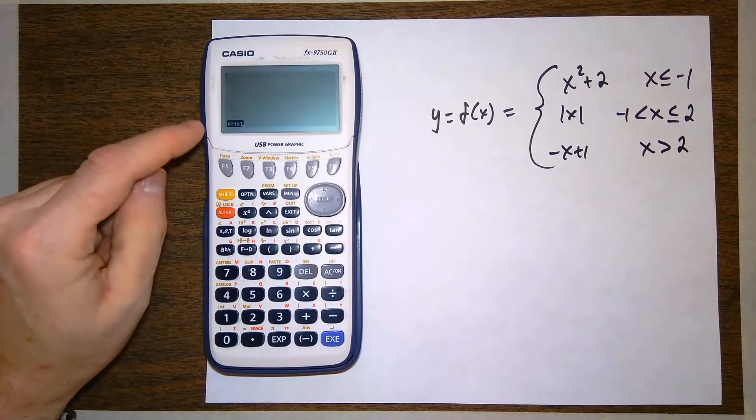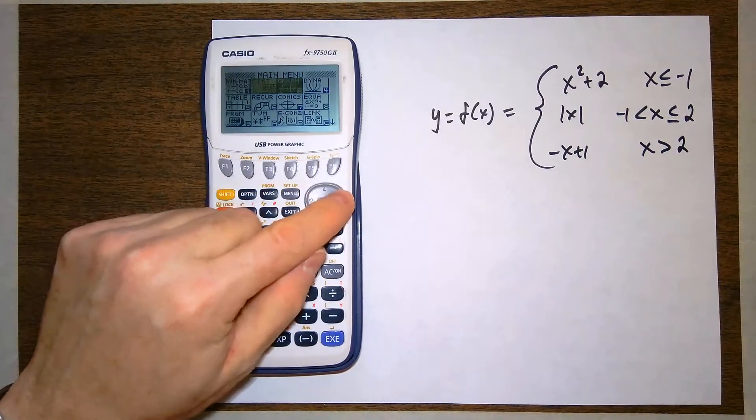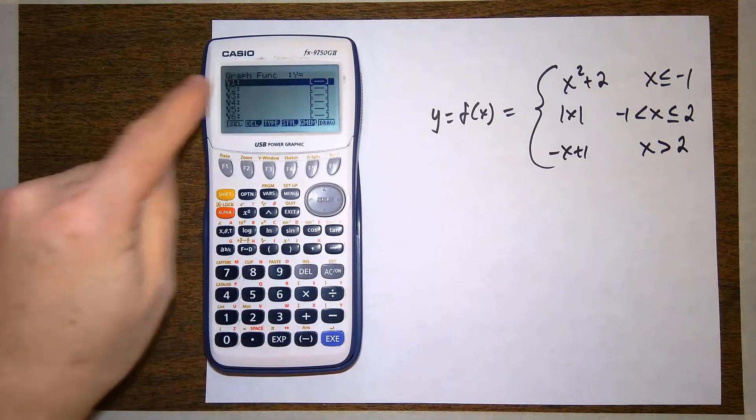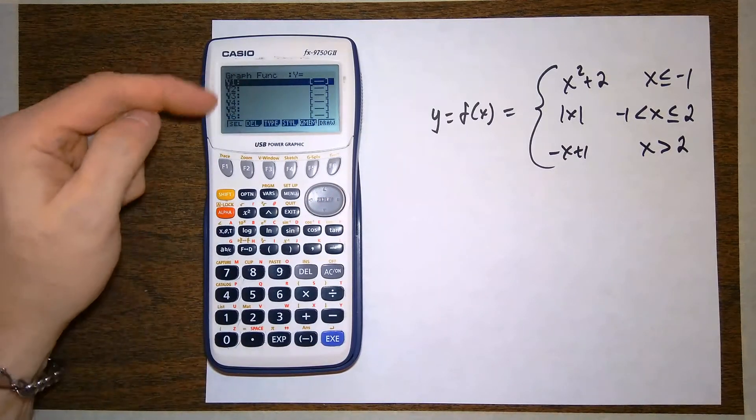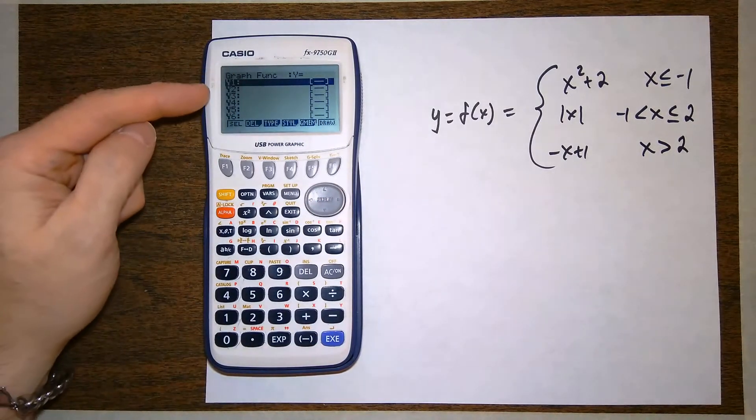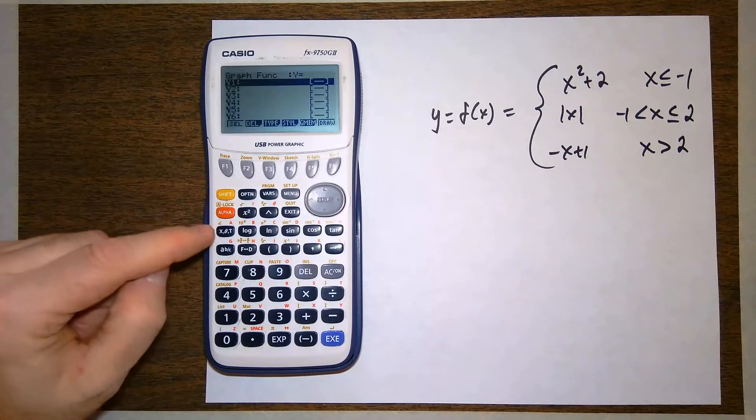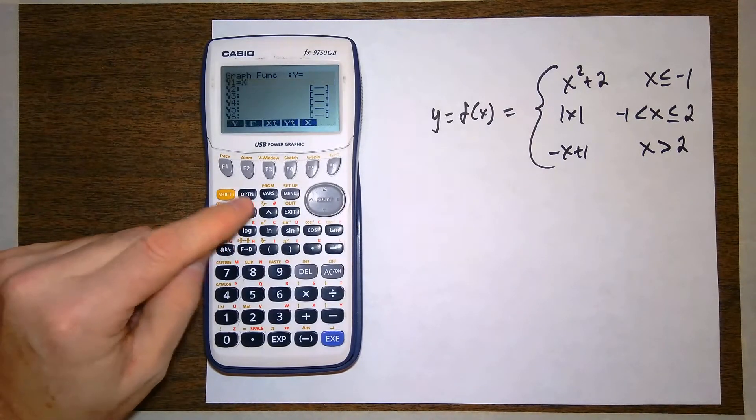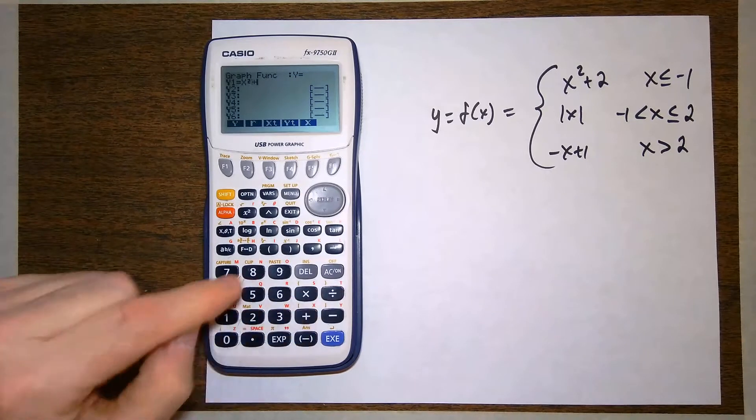So on the Casio I've got it turned on. I'm going to go to my menu, go to the graphing utility. Here it is. And I have to put the different pieces in. So first x squared, here's the variable button, x squared plus 2.